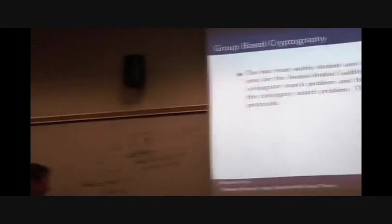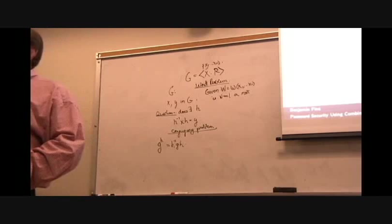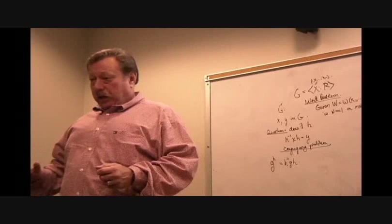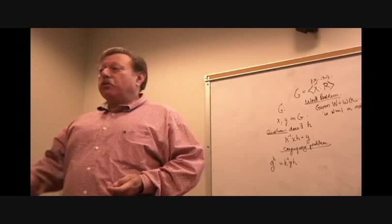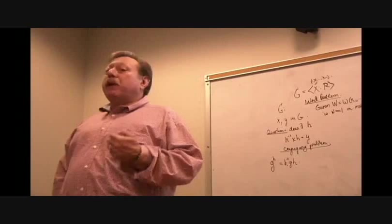In group theory, if you have two group elements, G to the H is H inverse GH. It's a conjugate. So what Ko and Lee did was they copied exactly the format of Diffie-Hellman, but they did it within a group and exponentiation was meant conjugation. But it works exactly the same way. The important thing is that exponentiation in a group by group elements behaves like exponentiation by integers if the elements commute.